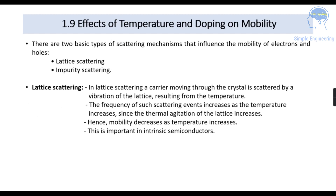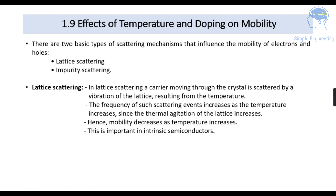The effect of temperature and doping on mobility. There are two basic types of scattering mechanism that influence the mobility of electrons and holes: lattice scattering and impurity scattering. In lattice scattering, a carrier moving through the crystal is scattered by the vibration of the lattice resulting from temperature. As temperature increases, the frequency of such scattering events increases due to thermal agitation of the lattice, and the mobility decreases. This type of scattering is important in intrinsic semiconductors.